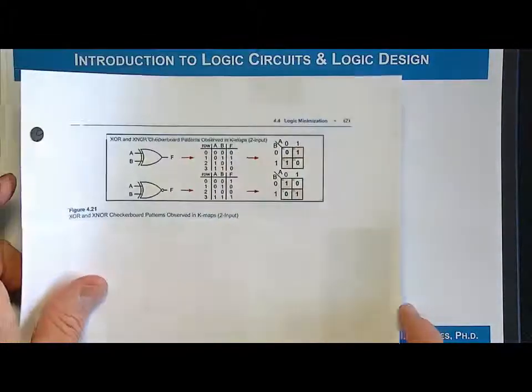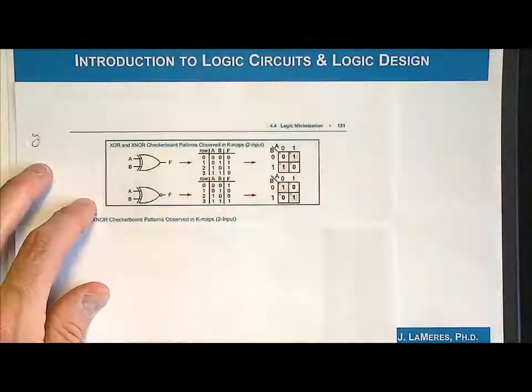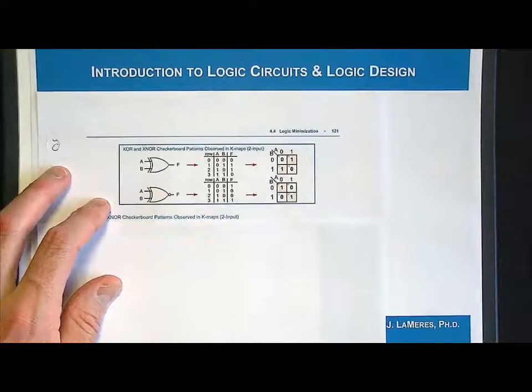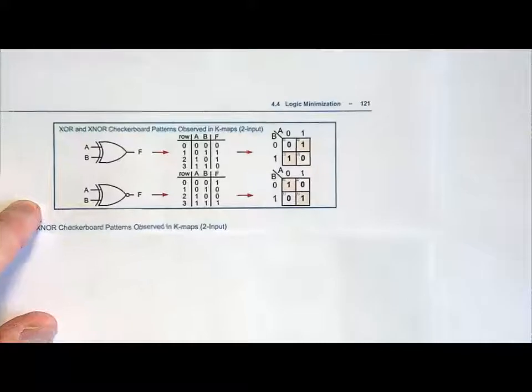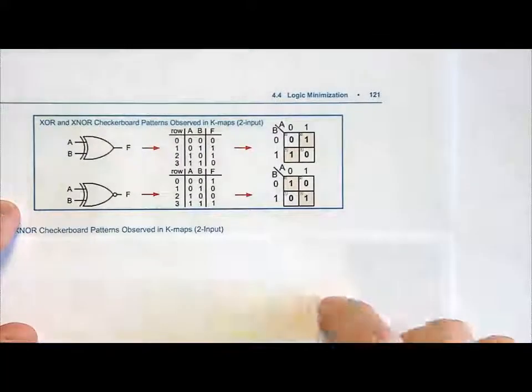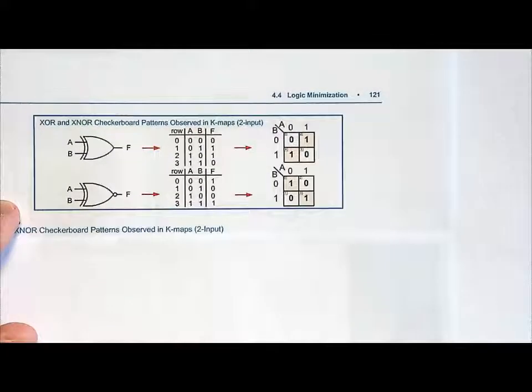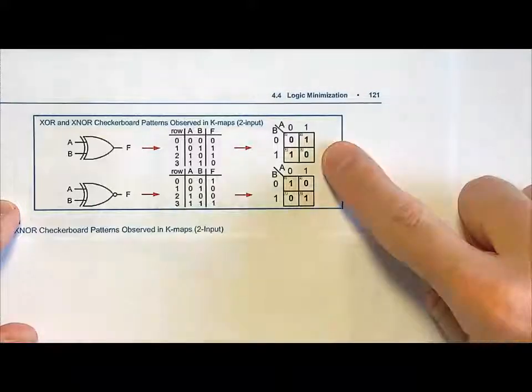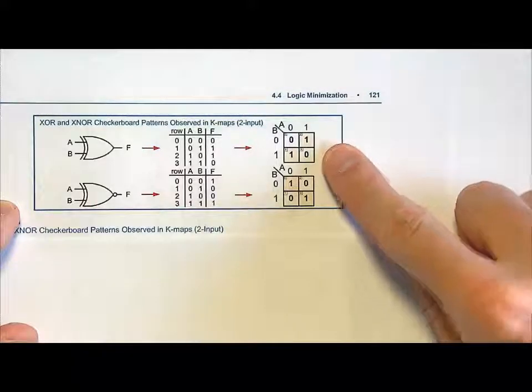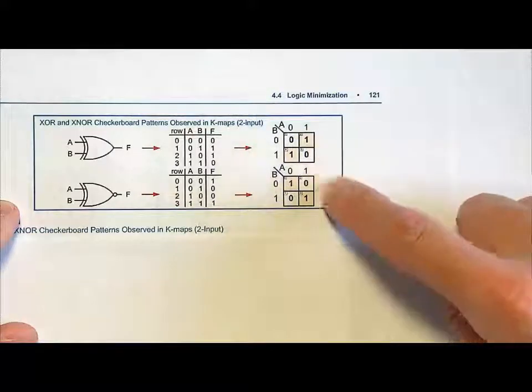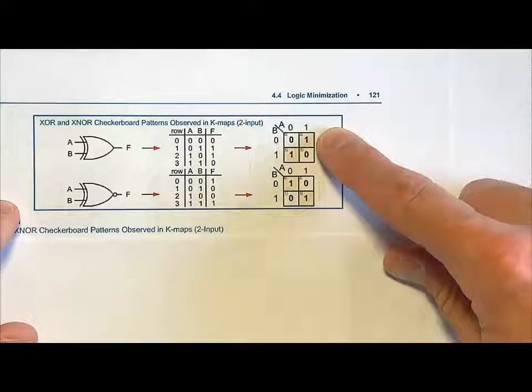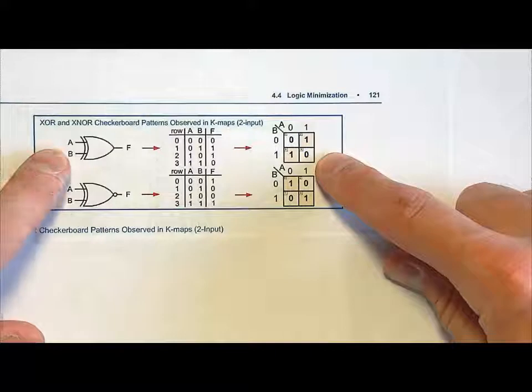Here is what we just drew in a better form. Notice the checkerboard patterns associated with exclusive OR and exclusive NOR gates. Anytime we see a checkerboard pattern, we should immediately think exclusive OR or exclusive NOR. Then we can map them into one of these patterns, and if it exists, we can replace it with an exclusive OR gate.